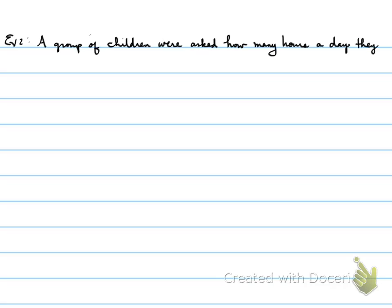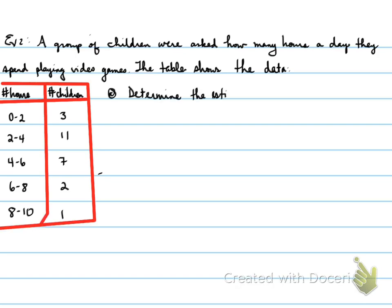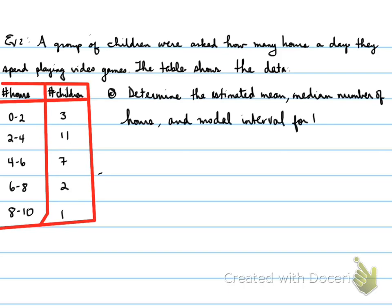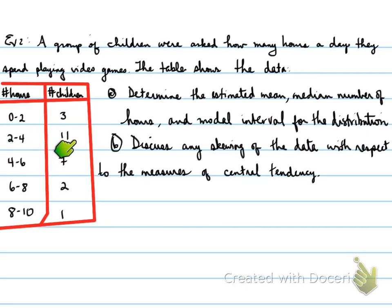Example 2: A group of children were asked how many hours a day they spend playing video games. The table shows the data. Part A: determine the estimated mean, median number of hours, and modal interval for the distribution, and discuss any skewing of the data with respect to the measures of central tendency. The modal interval is straightforward — the interval with the most children. Most children spend 2 to 4 hours playing video games, so that is the modal interval.